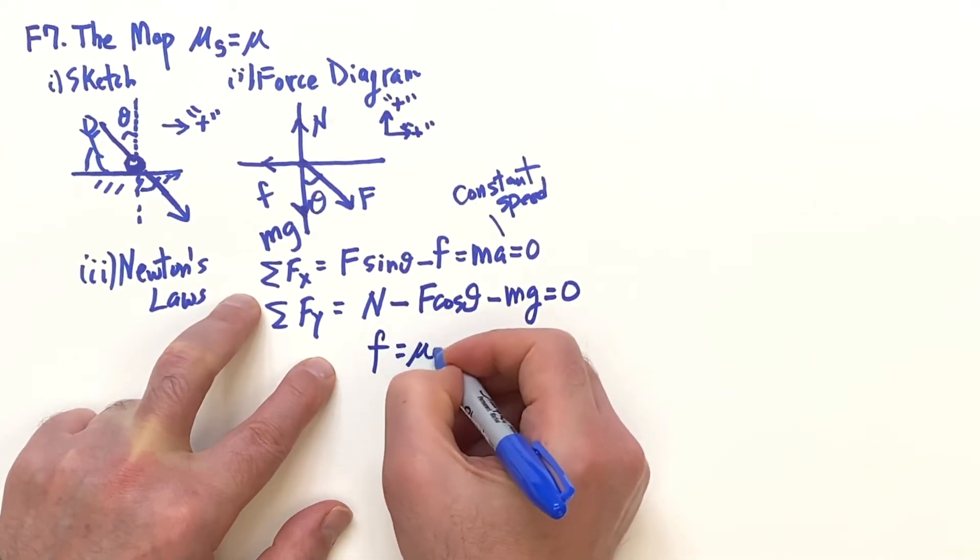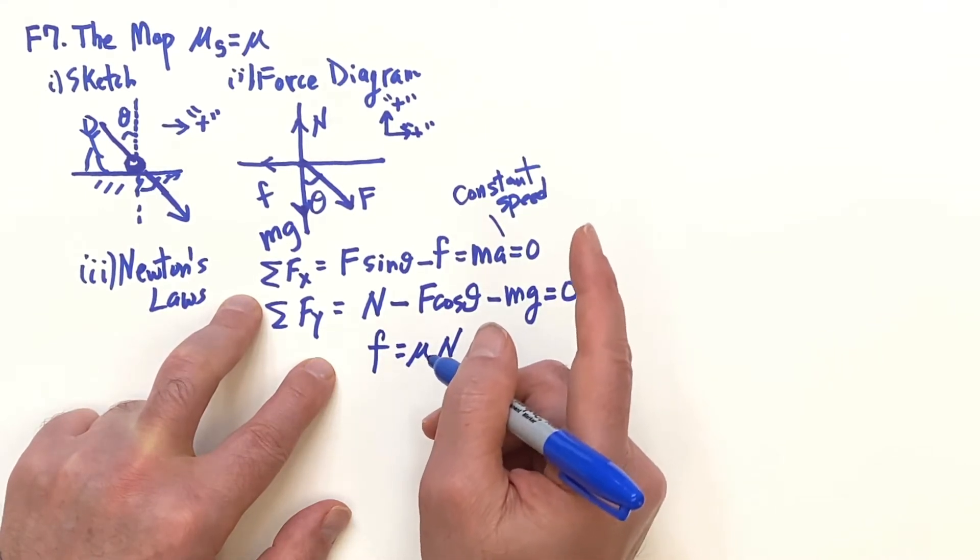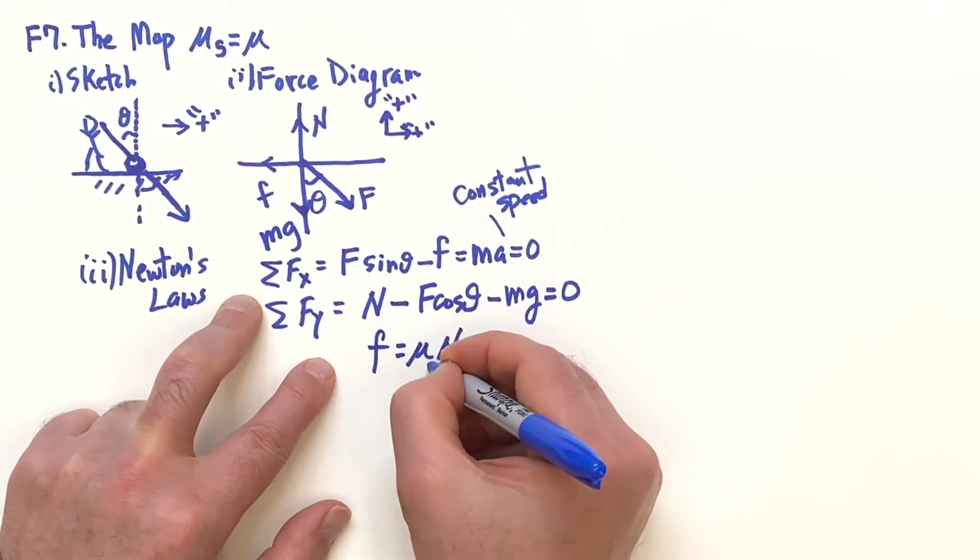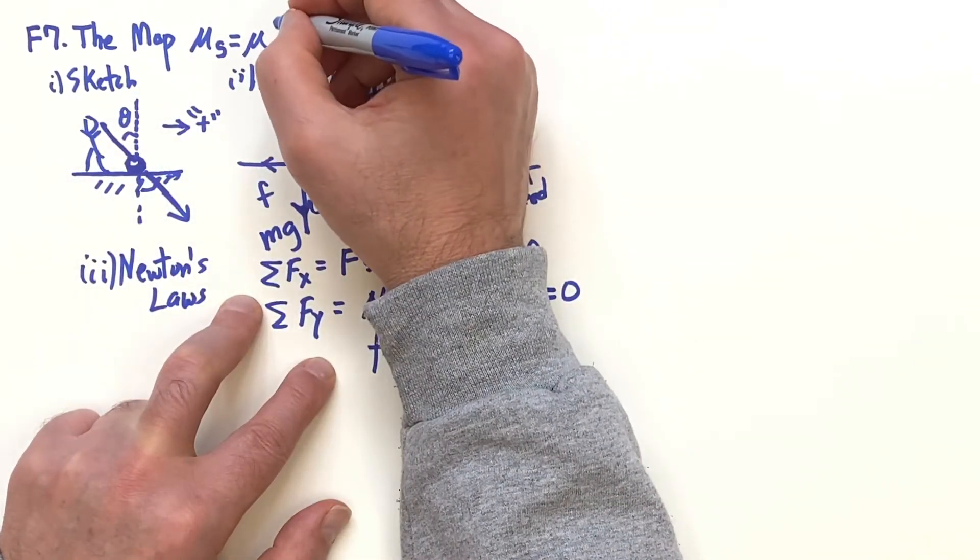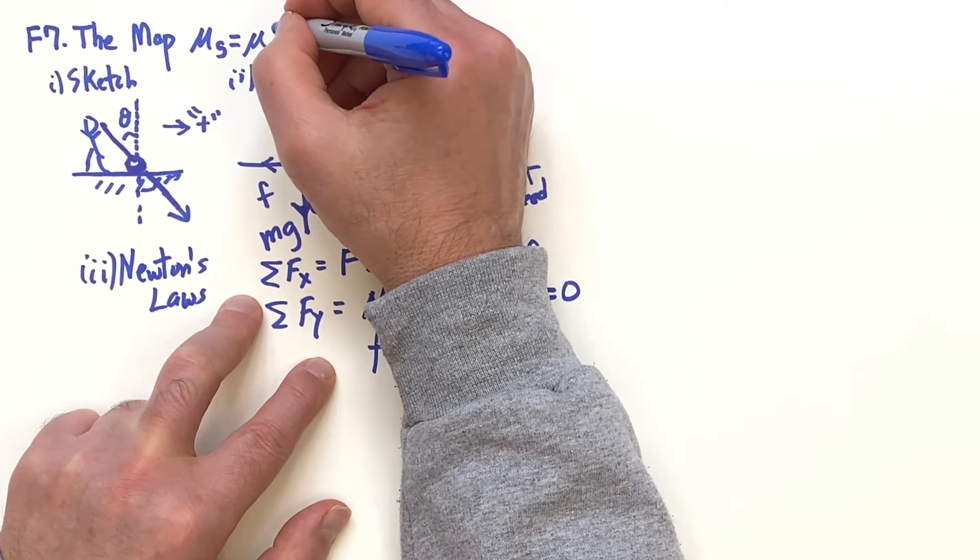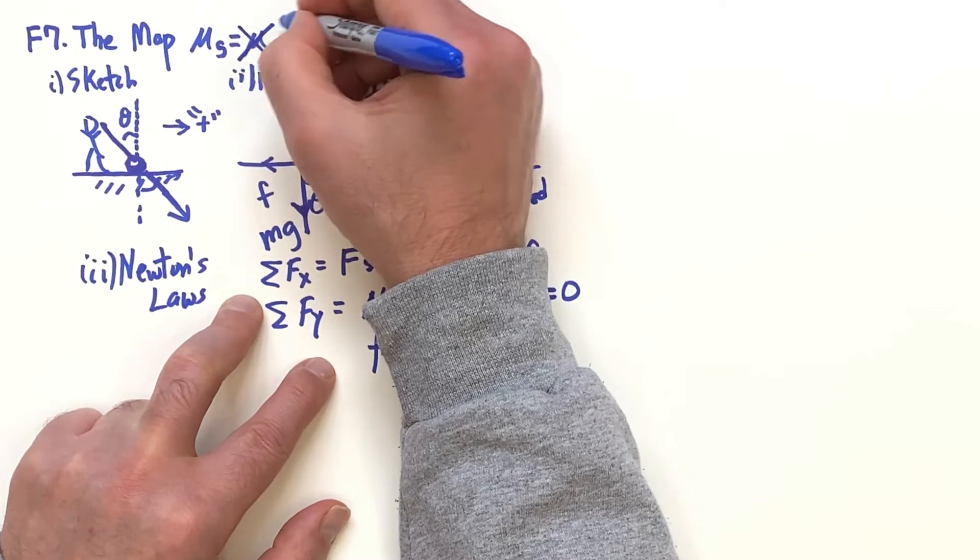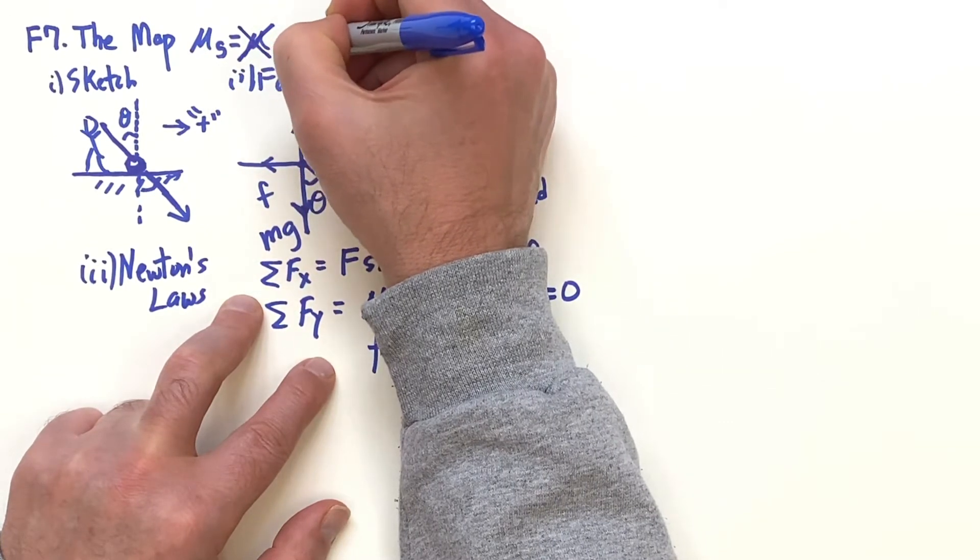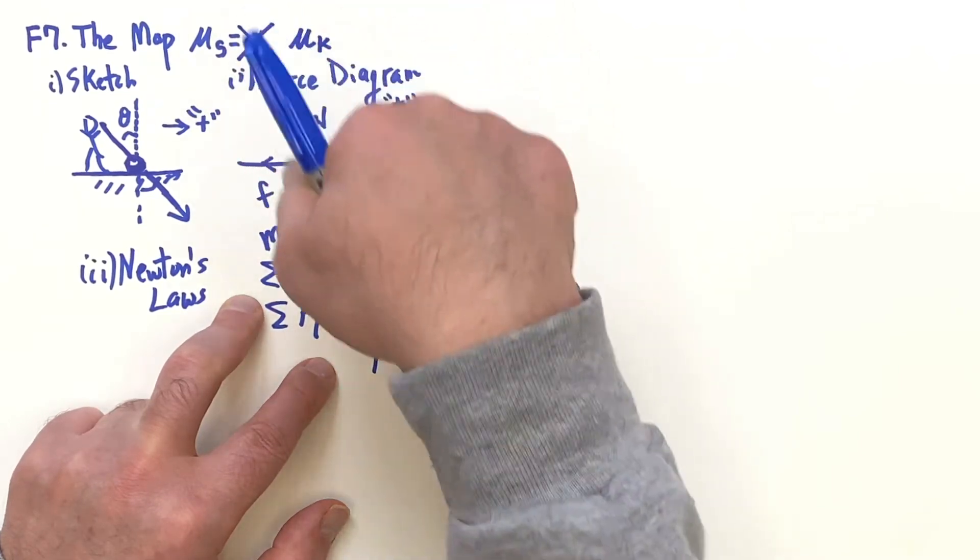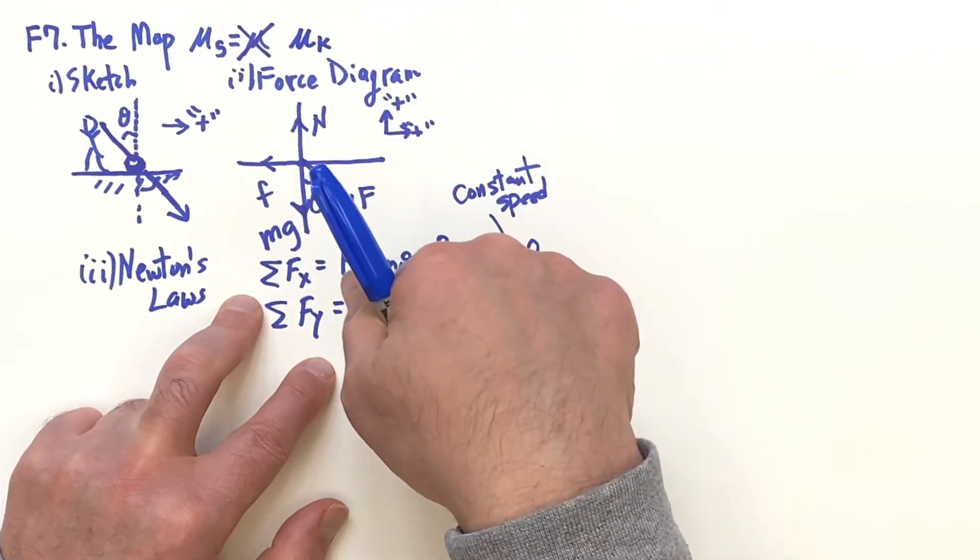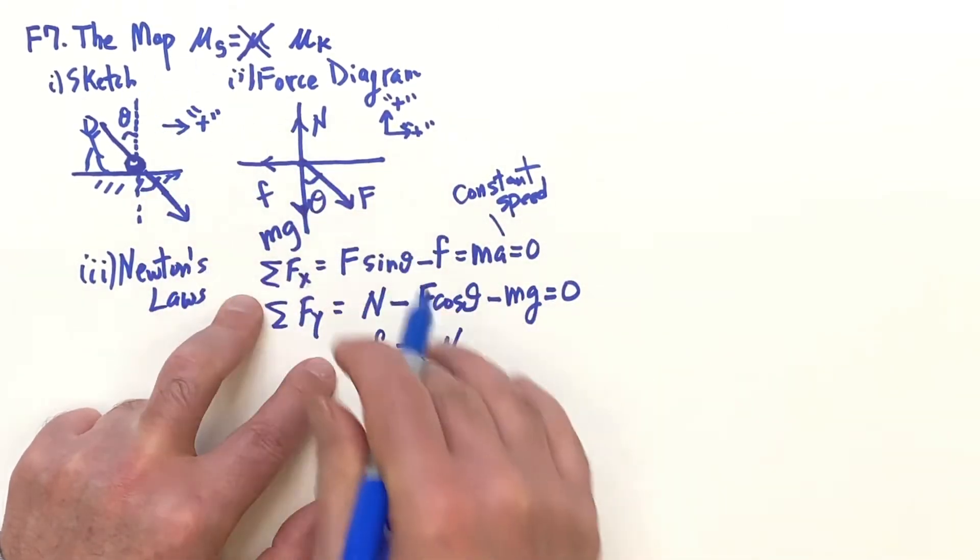Actually, this is going to be kinetic. Let me put that in there just to remind us, because that's moving. We're going to need the static when we're not moving. It's probably good here to keep that as the kinetic one because we got two of them we're dealing with in this problem and it can get confusing.